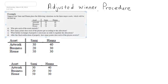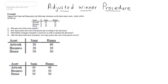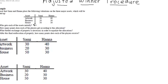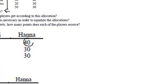In this video, I'm going to explain the Adjusted Winner procedure. First, we're asked who gets the assets initially. The asset goes to the highest bidder. So on the artwork, Hannah bid more than Sammy. For the business, Hannah bid more than Sammy. And for the house, Sammy actually bid more than Hannah. So now we want to find out how many points does each player get according to this allocation.